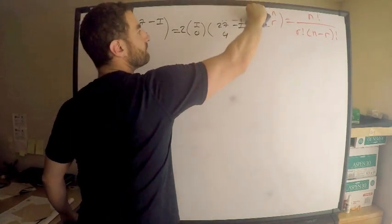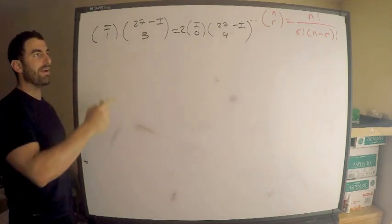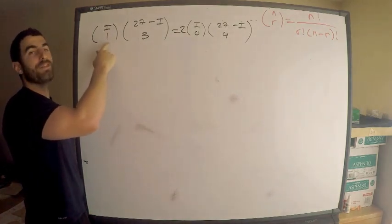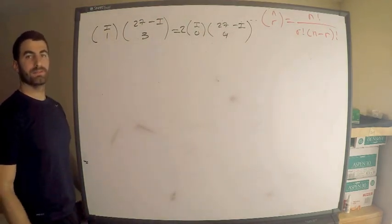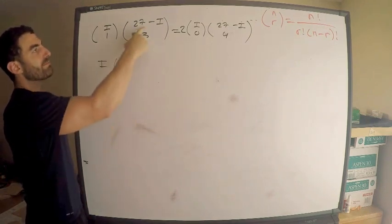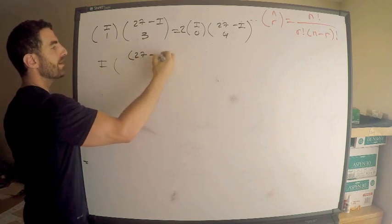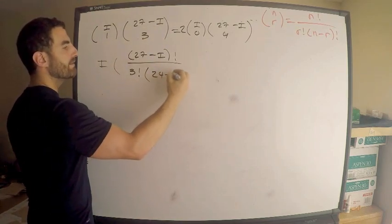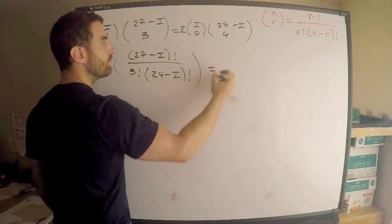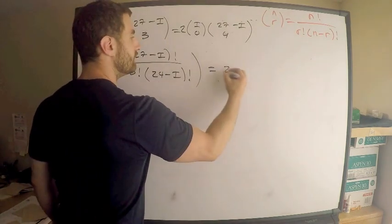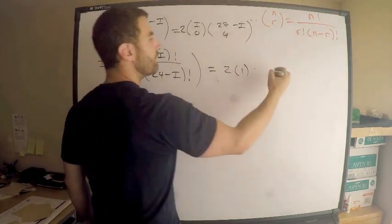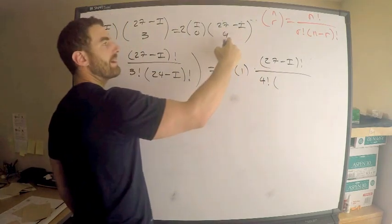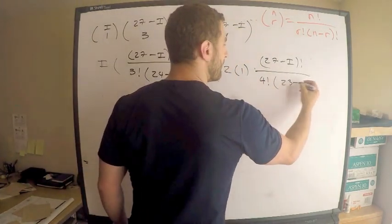I choose 1, I don't need to use that. This says, how many ways can I choose one thing from a set of I objects? Well, there are I ways to do that. So this is I times 27 minus I choose 3. I'll use the definition. This is 27 minus I factorial divided by 3 factorial times 27 minus I minus 3, 24 minus I factorial. Using the definition, equals what's I choose 0? How many ways can I choose 0 things from I? Well, only 1. So 2 times 1 times 27 minus I choose 4 is 27 minus I factorial divided by 4 factorial times 27 minus I minus 4 is 23, 23 minus I factorial.